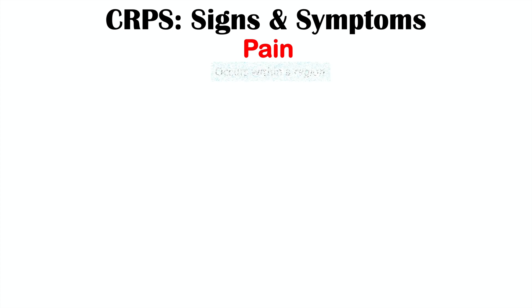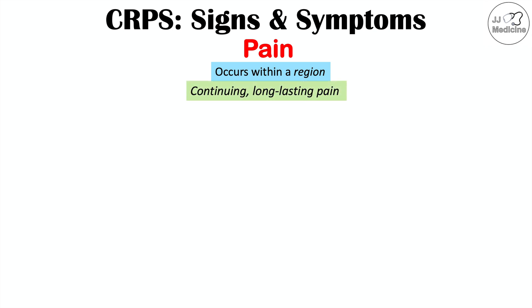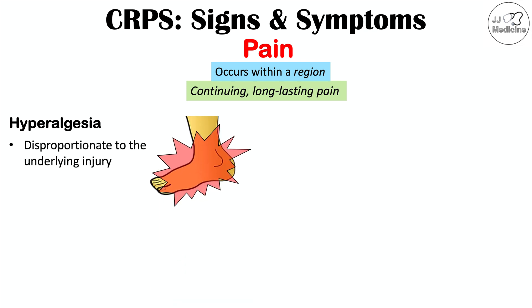The signs and symptoms of CRPS center on pain occurring within a region — not confined to a particular dermatome. This pain is long-lasting and continuous, lasting longer than expected, which is a hallmark finding. An important characteristic is hyperalgesia: pain disproportionate to the underlying injury. When the affected area is provoked with a painful stimulus, the pain response is exaggerated beyond what it should be.